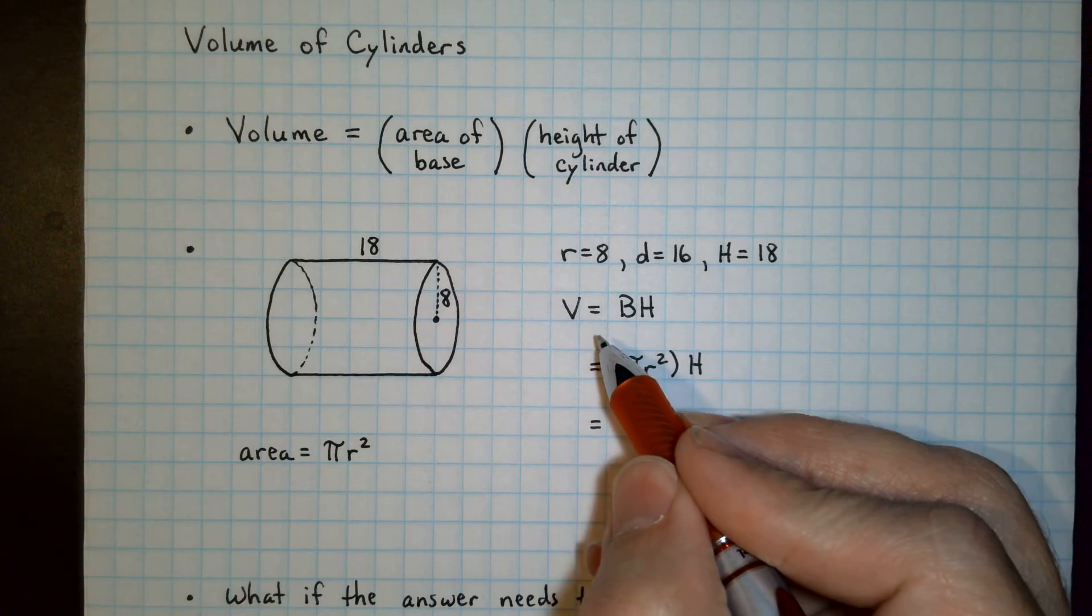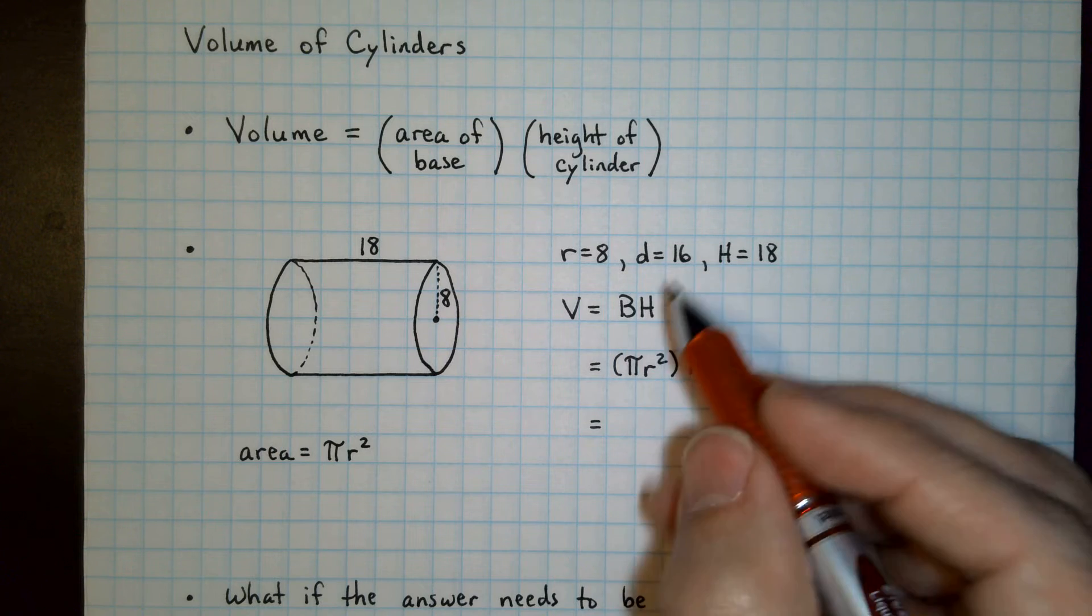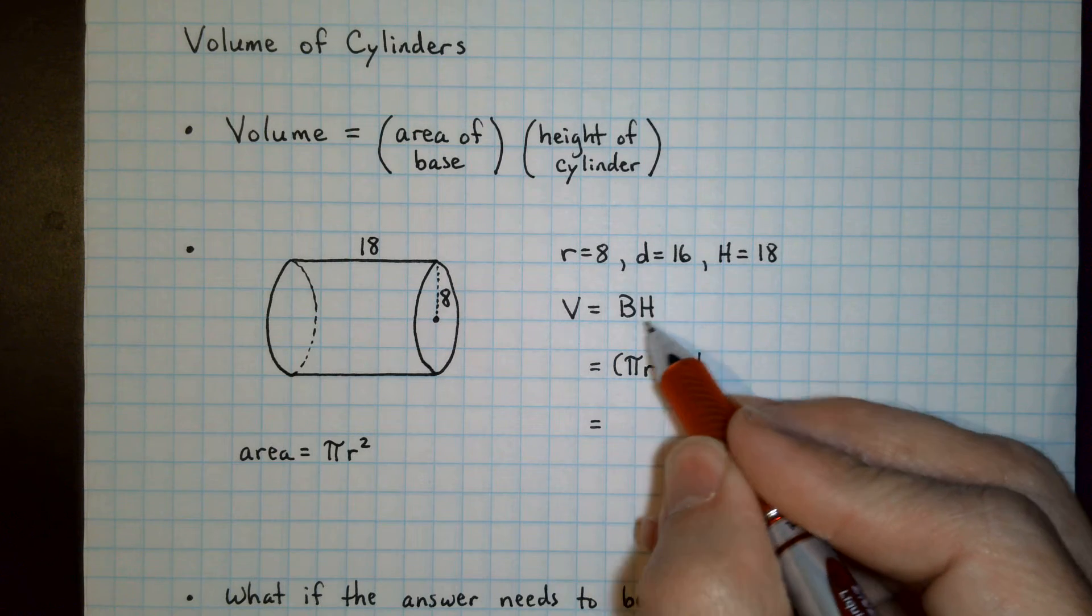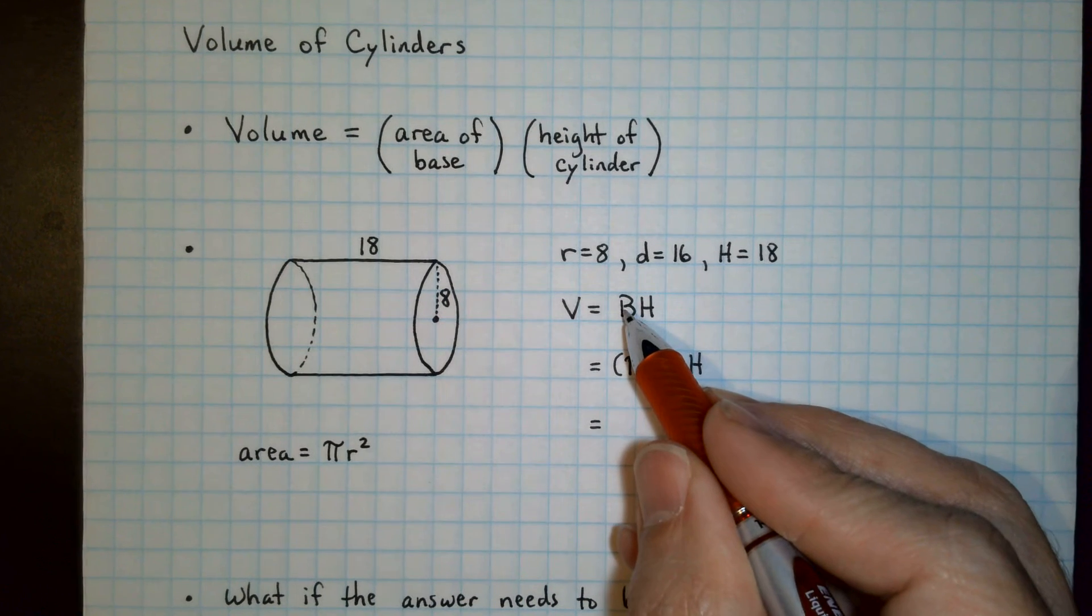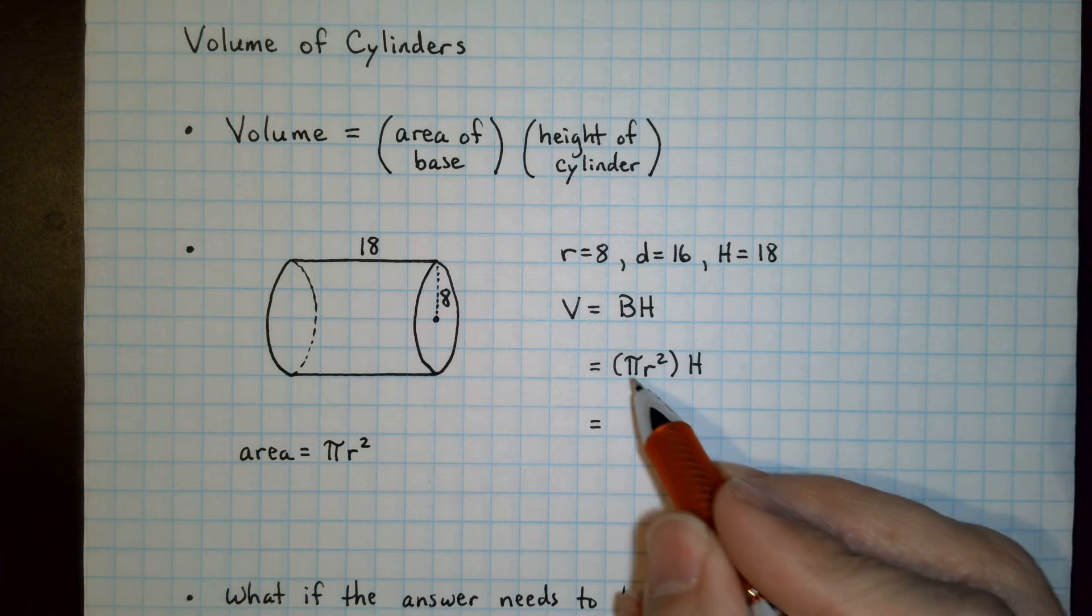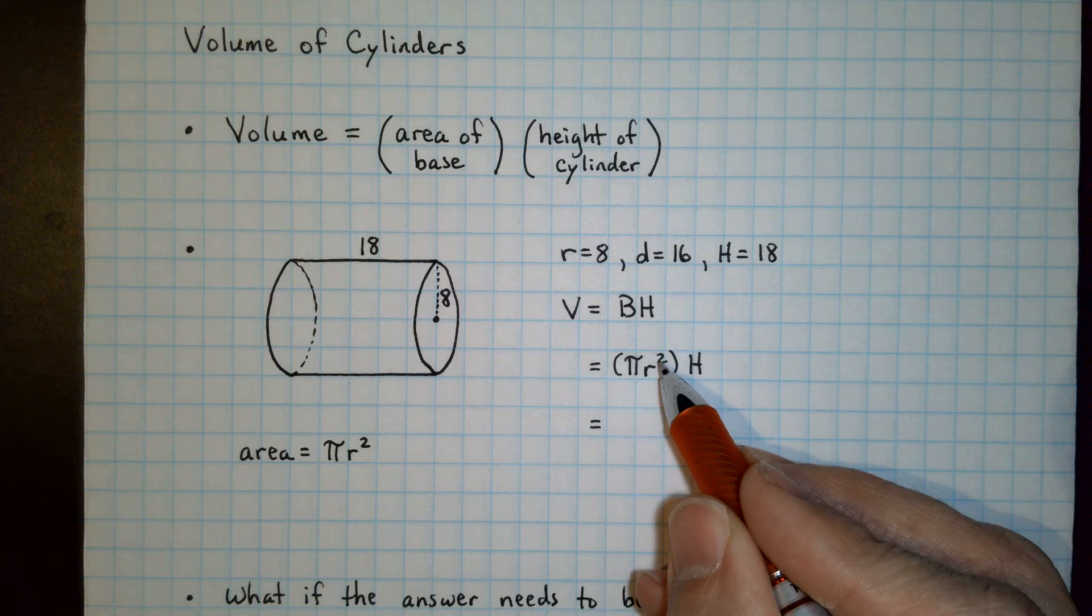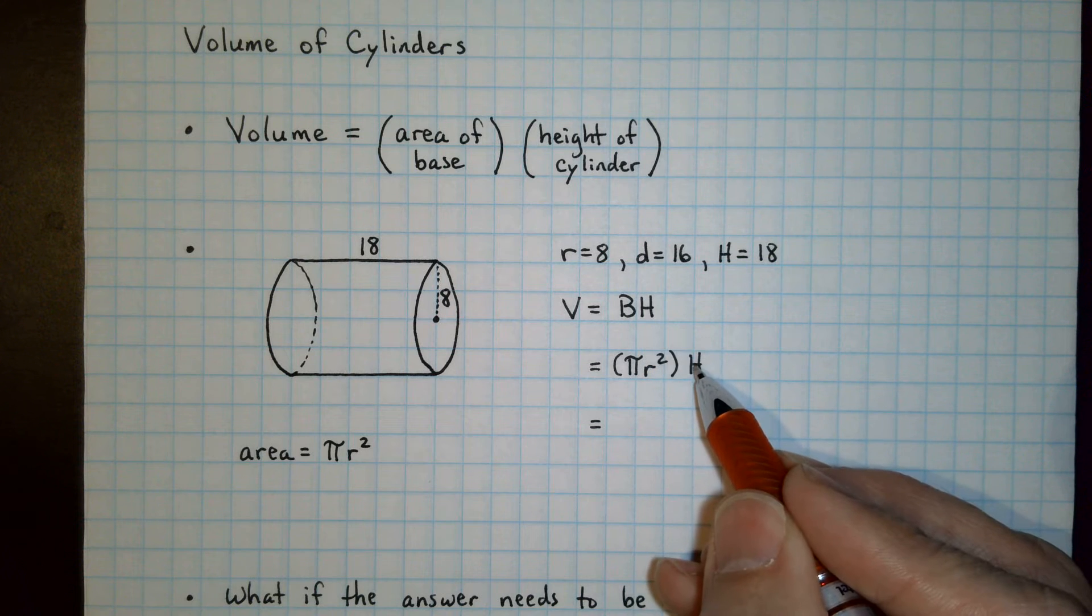The volume formula for any prism is area of the base times height of the cylinder. For us, since the base is a circle, the area of the base will be pi times radius squared, and the height is still the same.